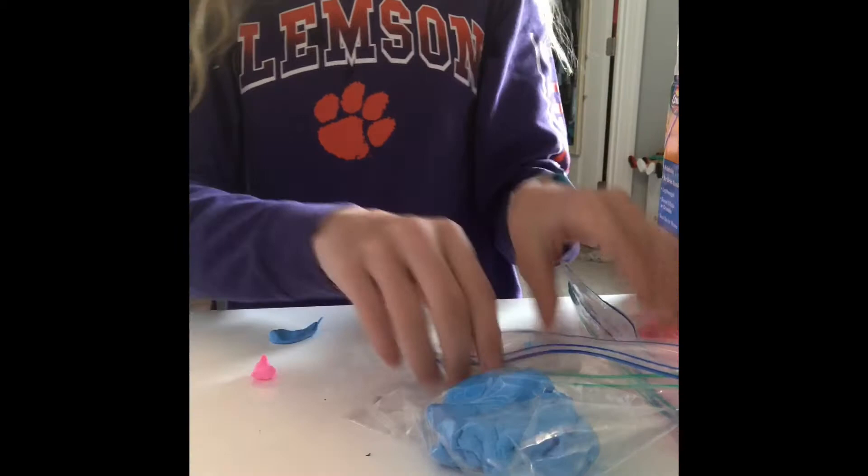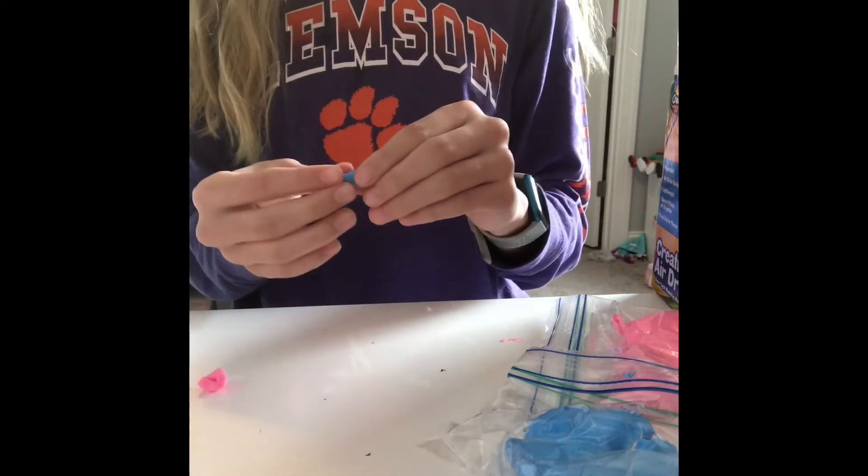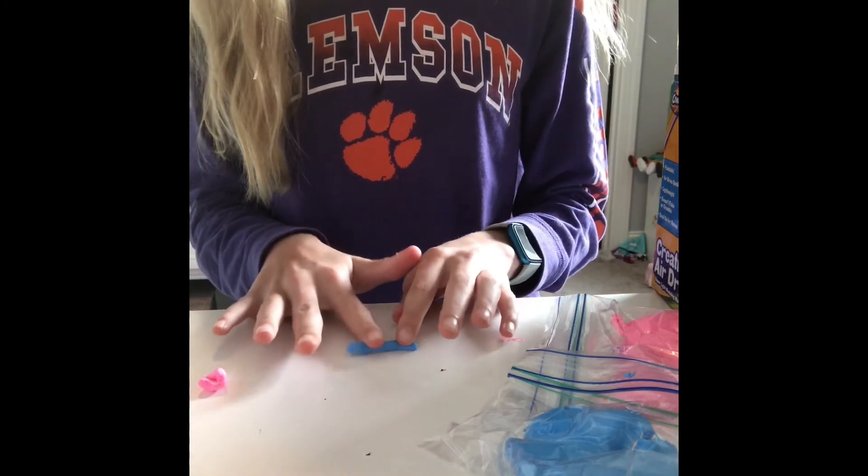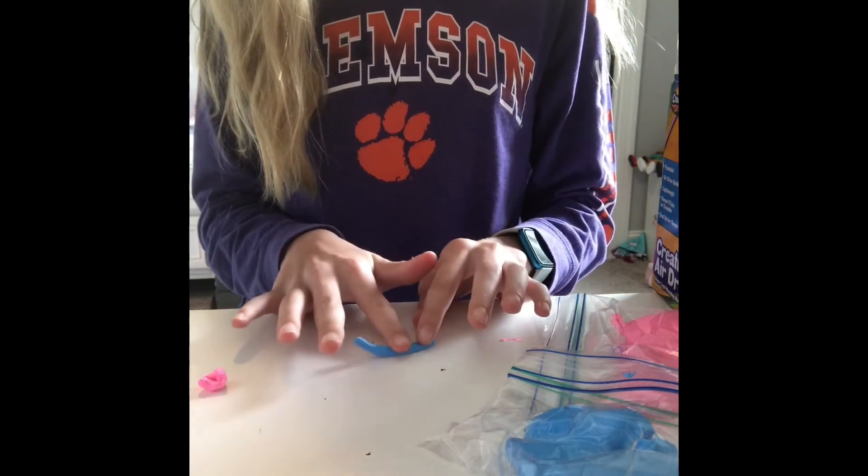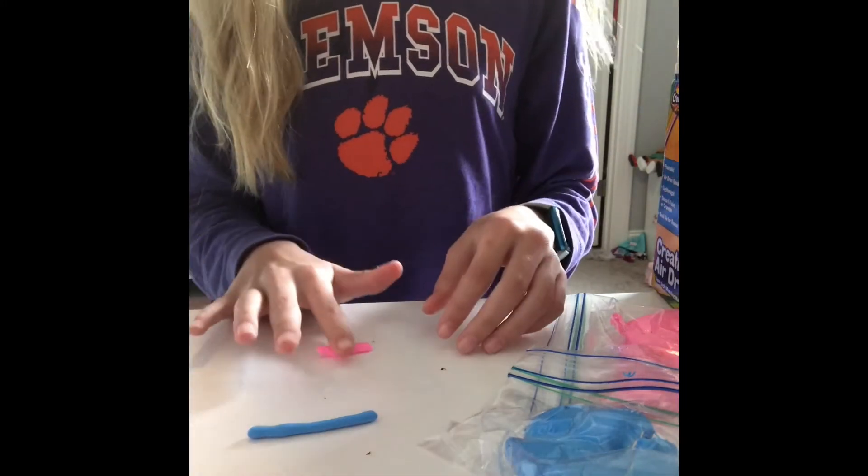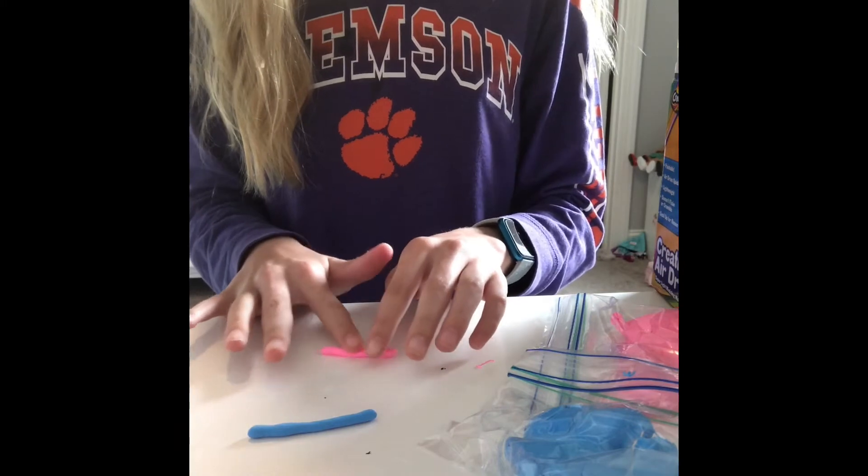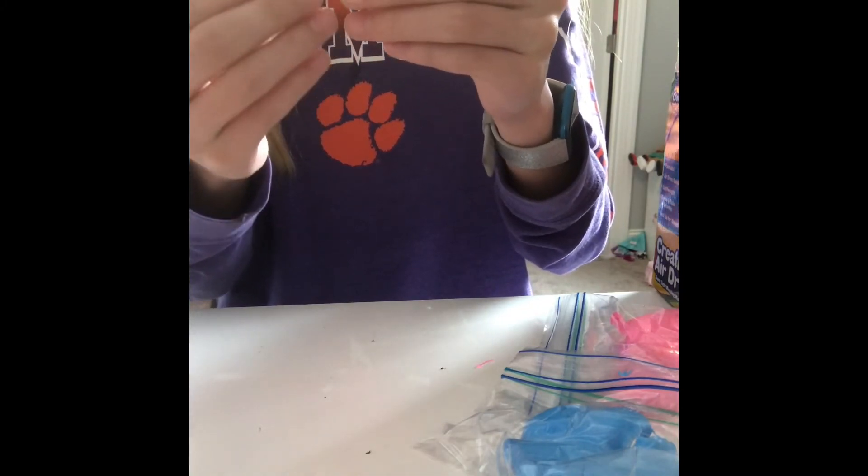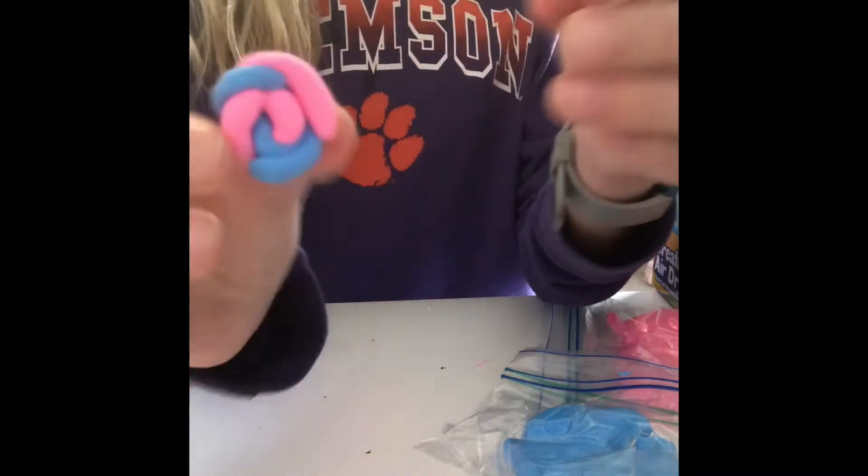Next I'm going to be making a little swirl lollipop and you're going to need two different colors. I'm using blue and pink. You're going to roll them basically to look like a snake and try to get them as even as possible. Once you have both long snake pieces, you are going to twist them and roll them together so it looks like a little lollipop, twisting them together so it makes this little twisted circle.